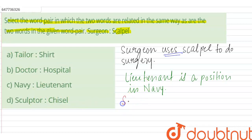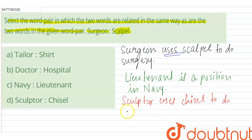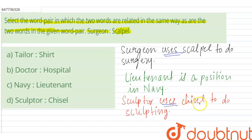If we look at option D — sculptor and chisel. A sculptor uses a chisel to perform carving or sculpting. Chisel jo hai unka tool hai — it is a tool of the sculptor, just as a scalpel is the tool of the surgeon. Chisel aur sculptor ek doosre se usi fashion mein related hain jaise surgeon aur scalpel. That is why option D is our answer. Thank you, students.